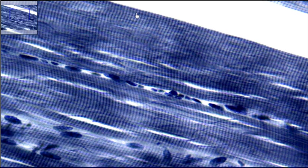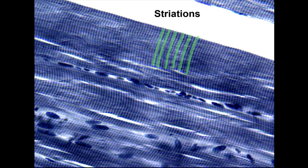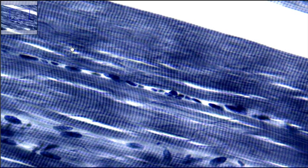Secondly, these thin lines coming across are called striations. So you have your skeletal muscle and it has striations coming across it.